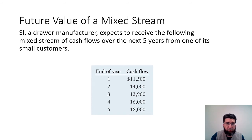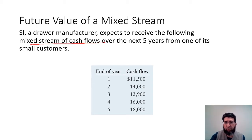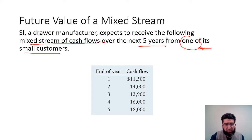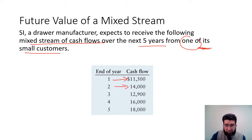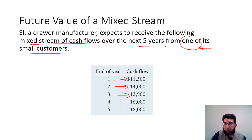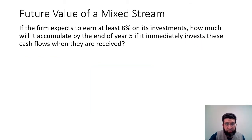The example is that SI, a draw manufacturer, expects to receive the following mixed stream of cash flows over the next five years from one of its small customers. The small customer pays SI at the end of each year: at the end of the first year it's $11,500; at the end of the second year, $14,000; at the end of the third year, $12,900; and so forth.